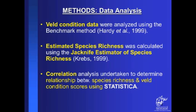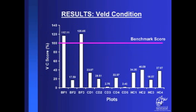Looking at results for veld condition, the first three sites were surveyed at the Bainsville study site. Sites one and three had excellent veld condition scores, actually exceeding the benchmark score for this vegetation type. Site two had a poor score of 17%, but interestingly this site also had the highest species richness compared to all other study sites surveyed. The lowest veld condition scores were recorded at the Cedara study sites, with the lowest score of 2% and highest 33%. The Hilton College study site showed slightly better scores but were still poor relative to the benchmark.